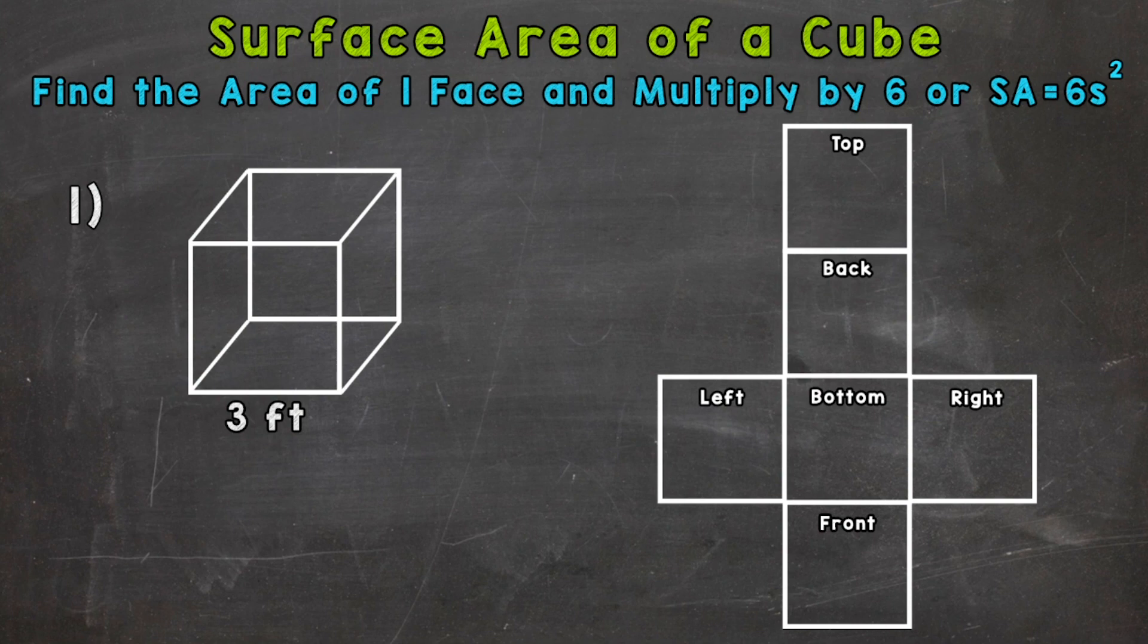And remember, the surface area is the total area of the outside part or layer of a 3D figure. So when we're taking a look at cubes, we can find the surface area by finding the area of one face and multiplying it by six, because a cube has six faces, and each face has the same area. So if we find the area of one face, we can just multiply it by six, and we get the surface area.